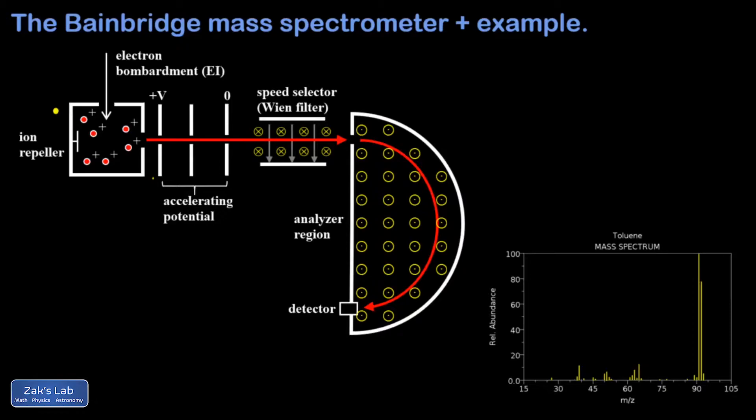Then we need to ionize the gas somehow, and electron bombardment, also known as electron ionization, is a fairly popular way to do this. We hit the gas atoms with energetic electrons, and the collisions will sometimes knock an electron off the atoms or molecules we want to study, leaving these particles positively charged.